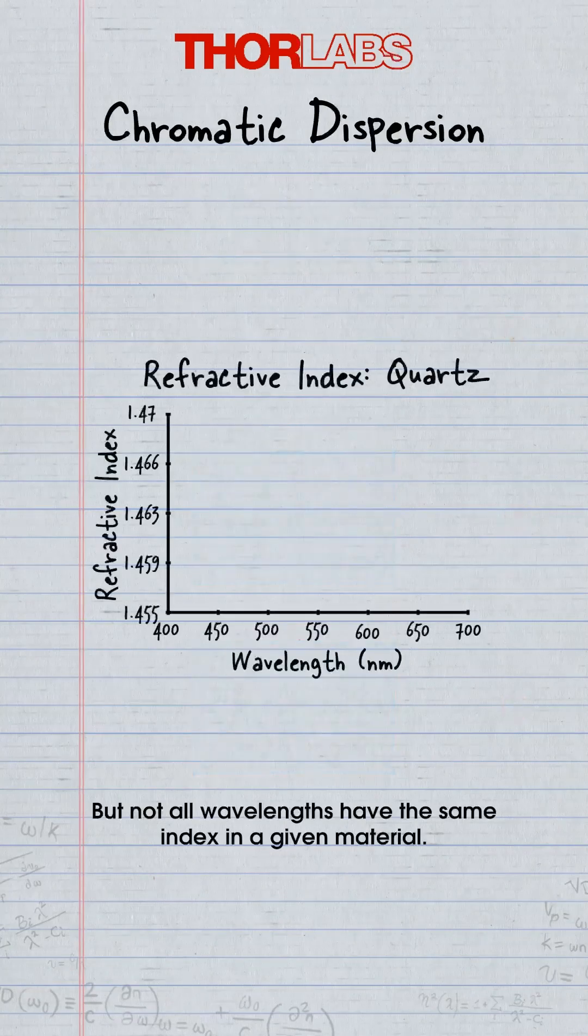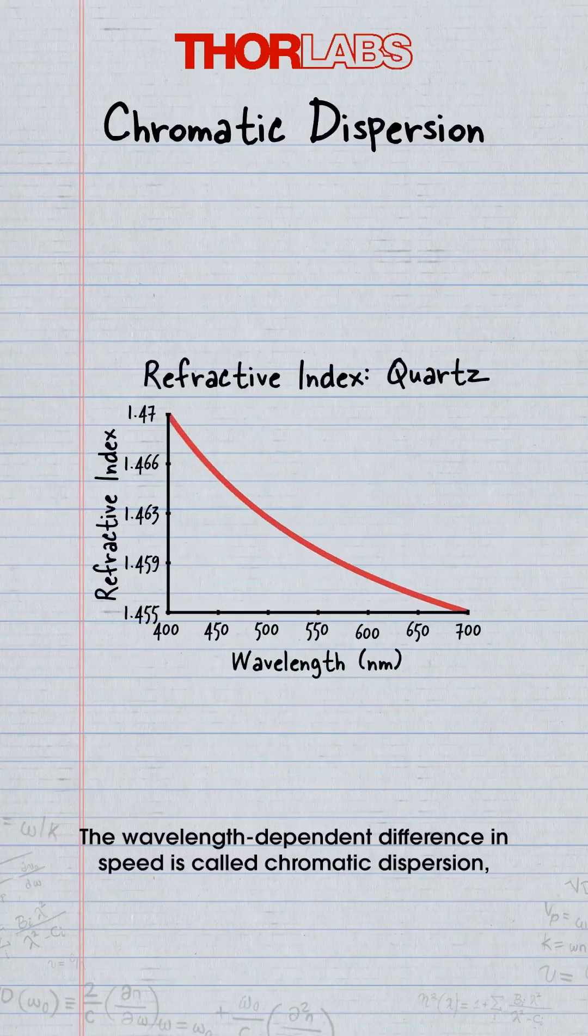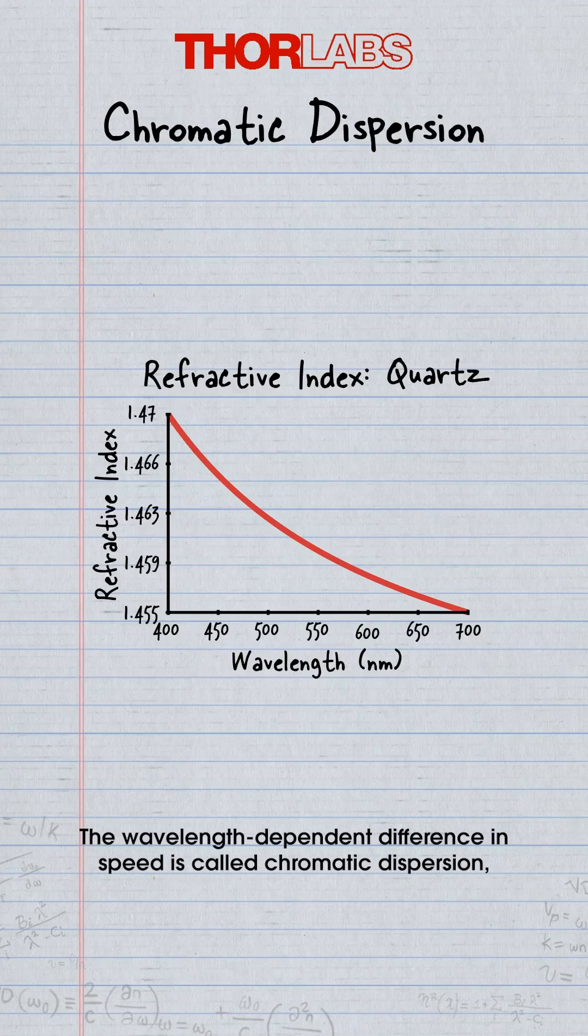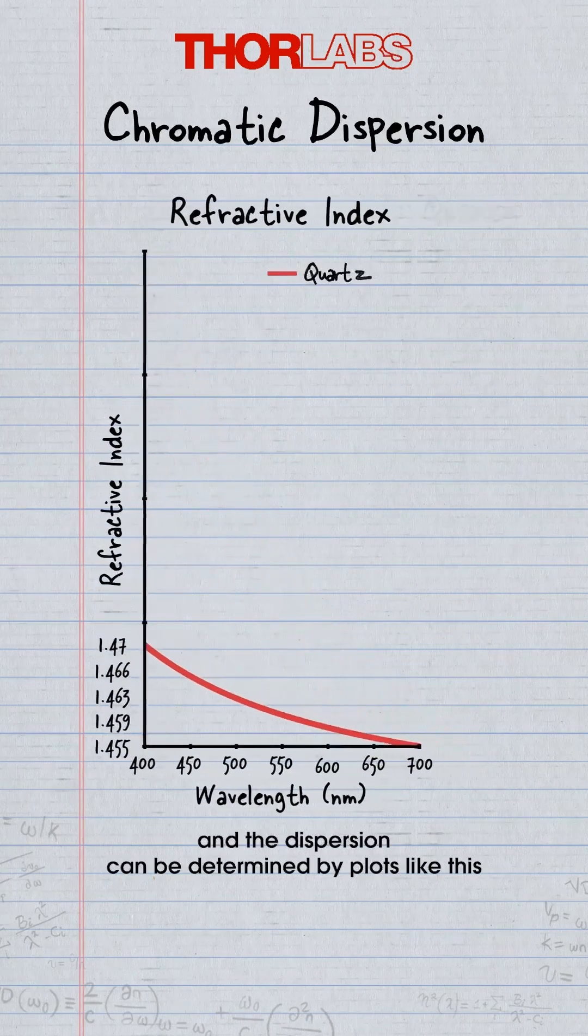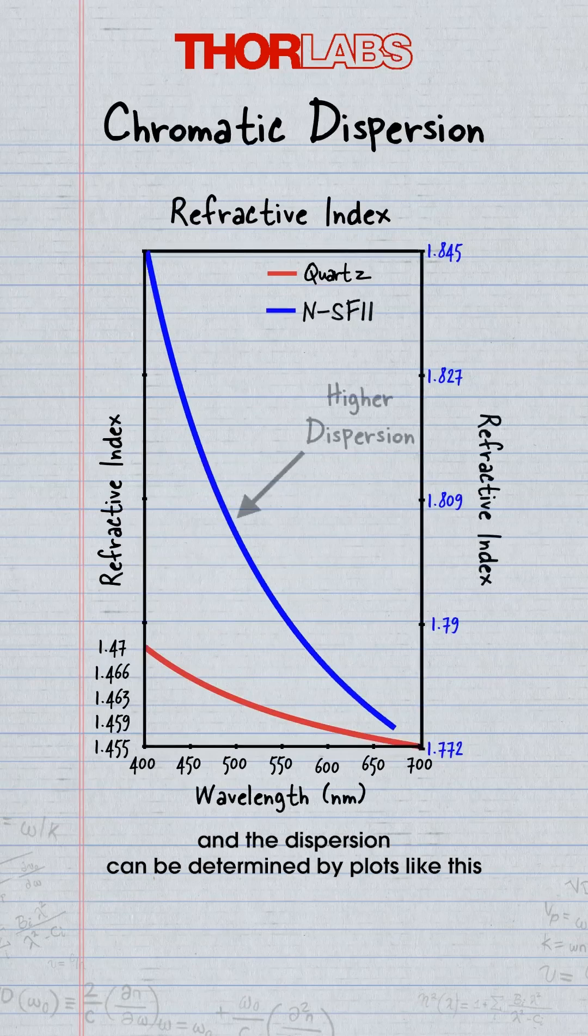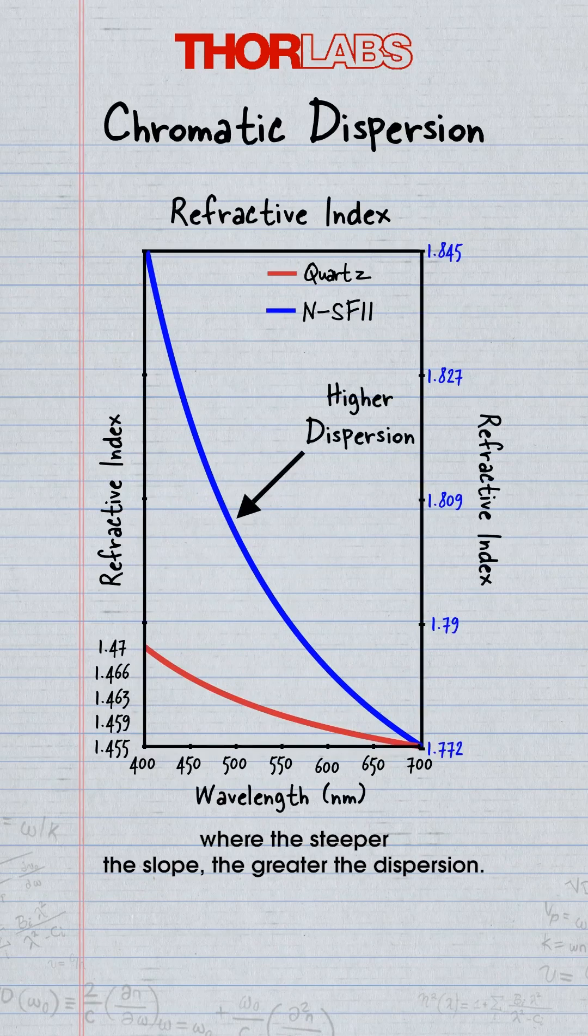But not all wavelengths have the same index in a given material. The wavelength-dependent difference in speed is called chromatic dispersion, and the dispersion can be determined by plots like this, where the steeper the slope, the greater the dispersion.